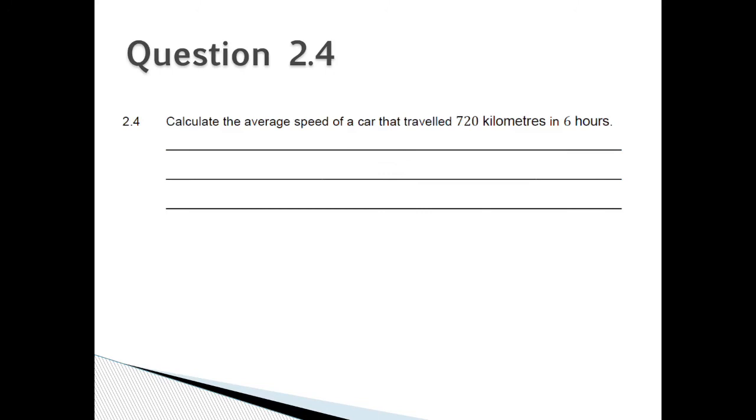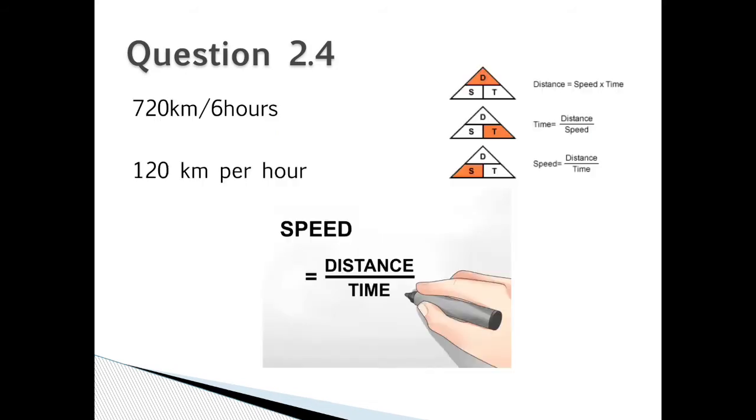Question 2.4: Calculate the average speed of a car that travelled 720 km in 6 hours. Question 2.4: 720 km divided by 6 hours is equal to 120 km per hour. So we use the formula of speed is equal to distance over time.